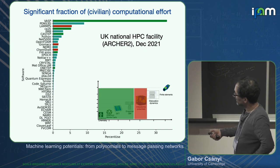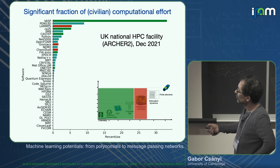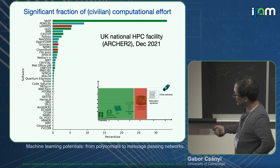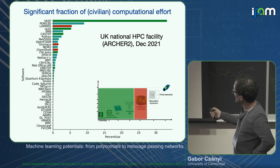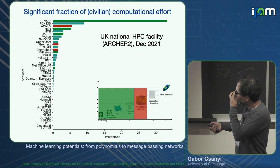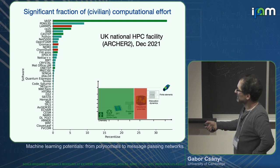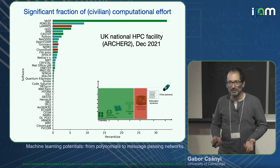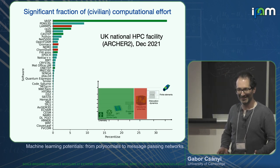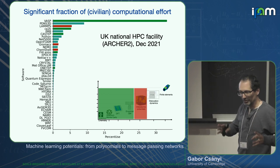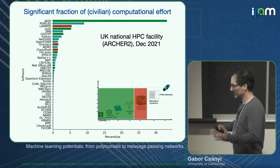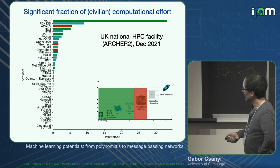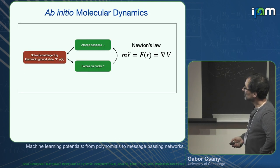This is the UK National High Performance Computing Facility usage from December 2021. These are the codes being run — percent use — and the green codes are all forms of electronic structure code, and the red codes are atomistic potential codes. VASP alone is 35%, very popular, very fast. Adding together CP2K, FHI-aims, CASTEP — it's about 40% of the UK's civilian HPC being used to do the 'wrong thing' in the multi-scale sense — the only thing which people could do before machine learning potentials, which is DFT molecular dynamics.